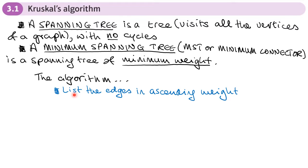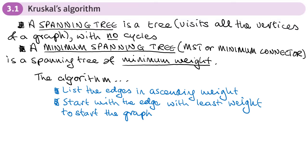The first thing we do in this algorithm is we're going to list all the edges in the graph in ascending order, in other words, from smallest to largest. Next, we're going to start with the edge with the least weight to start the graph off. So this would be the edge at the start of our list.